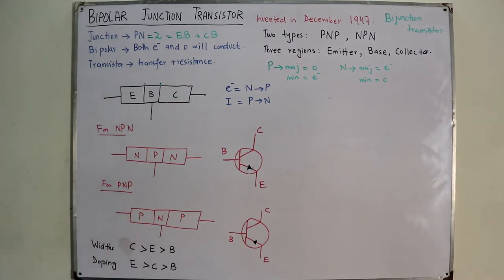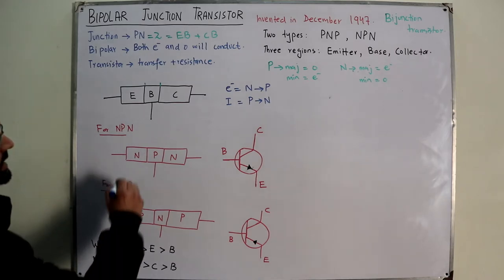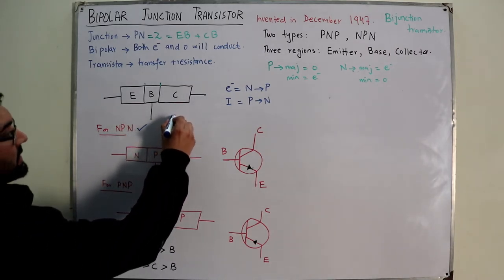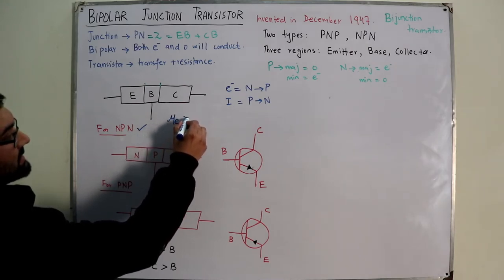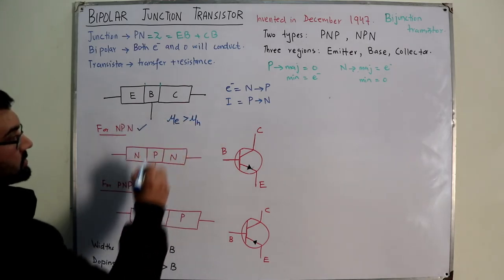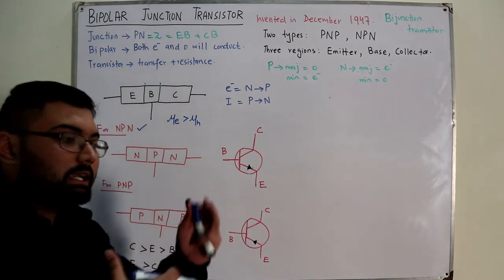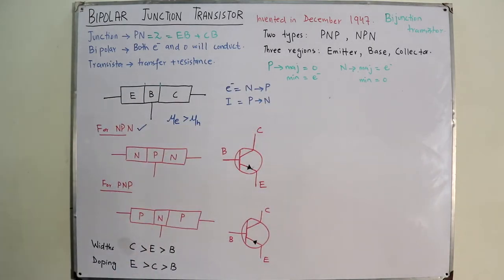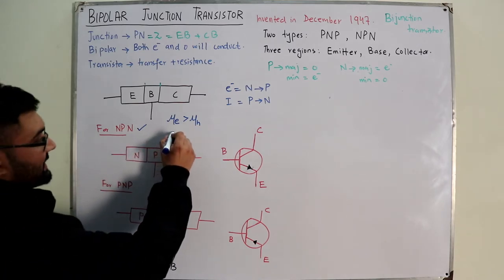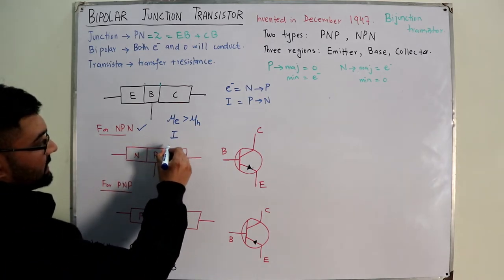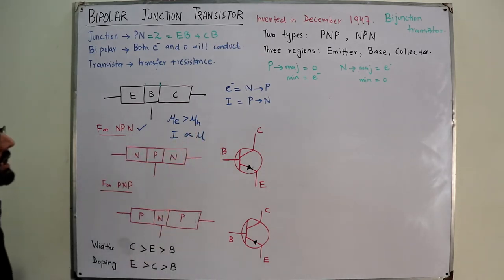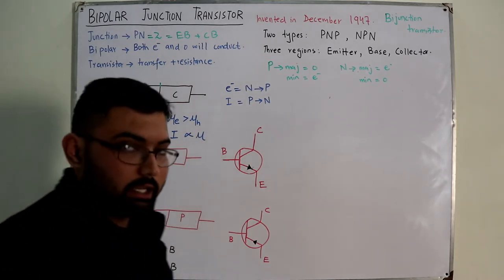The NPN transistor is generally preferred. This is because the mobility of electrons is greater than the mobility of holes. Mobility is the relative speed of charge carriers inside the crystal. Since current is directly proportional to carrier mobility, higher electron mobility means greater current in NPN devices.